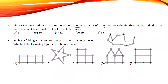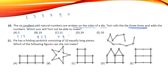The 6 smallest odd natural numbers are written on a die: 1, 3, 5, 7, 9, and 11. Tony rolls the die 3 times. You can make 19 (9+7+3), 21 (11+9+1), 29 (11+11+7), but you cannot get 35 from any three of these numbers.